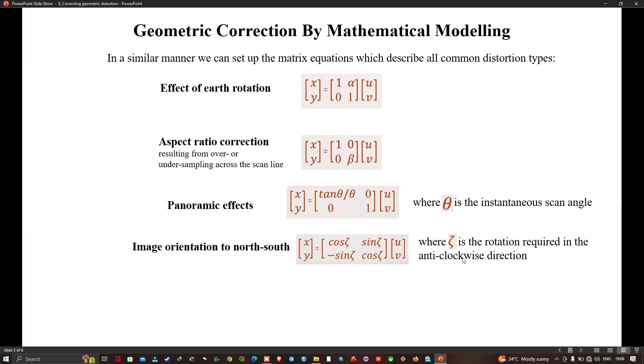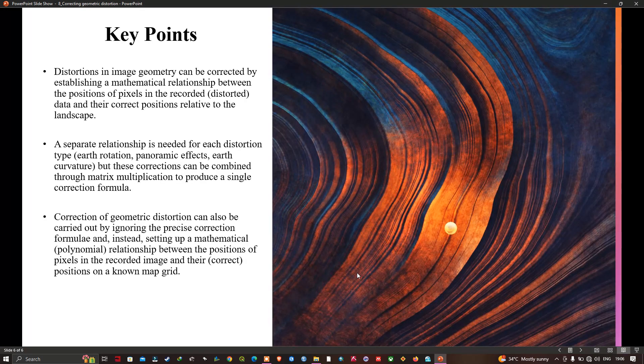We have only reviewed the most significant sources of geometric distortions here. The key points covered in this video: distortions in image geometry can be corrected by establishing a mathematical relationship between the position of the pixel in the recorded data and the correct position related to the landscape.